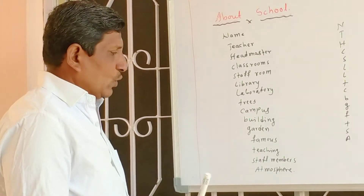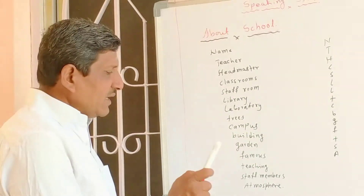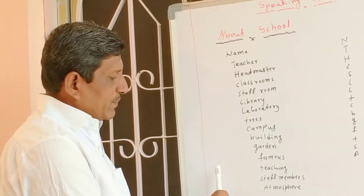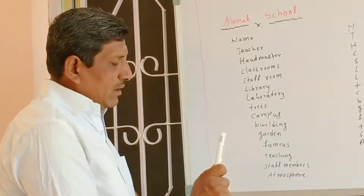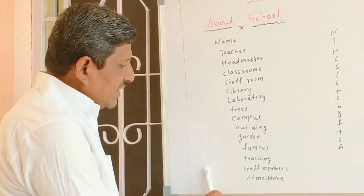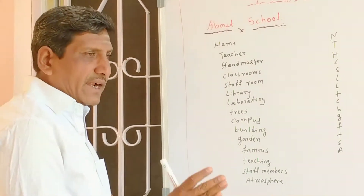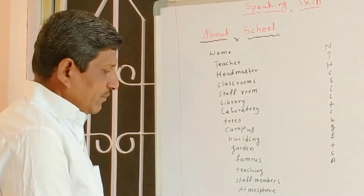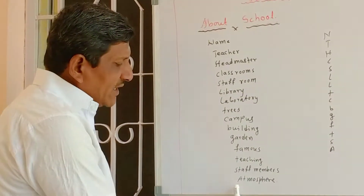My school has a very nice building and a big garden in front of the school. My school is famous in Akalkot Taluka. My school has effective teaching by the teachers, and my school has five staff members who are good, kind, and working very hard.